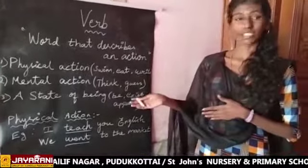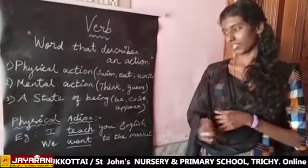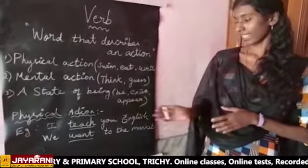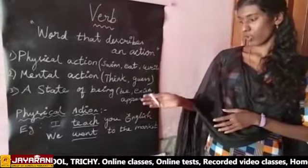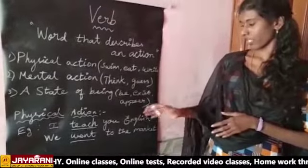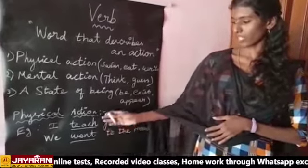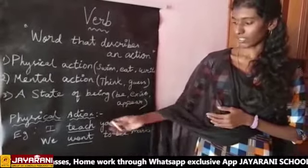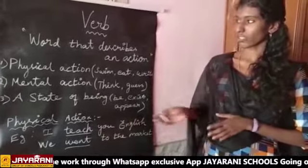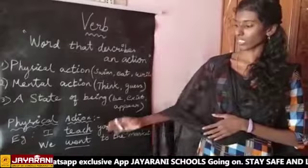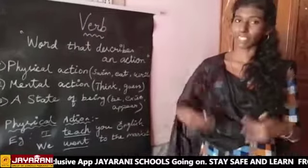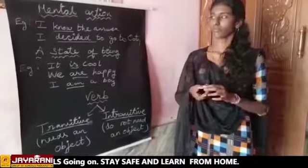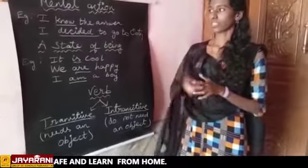First, let's look at physical action. Take a look at the examples here: 'I teach you English' and 'We went to the market.' Here, 'teach' and 'went' are both physical action verbs — they are done using a physical part of the body.